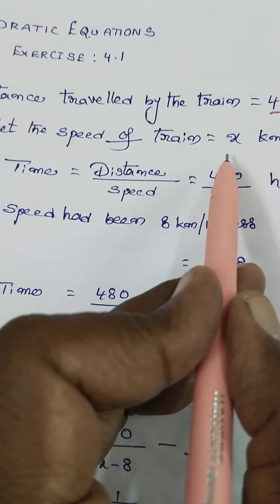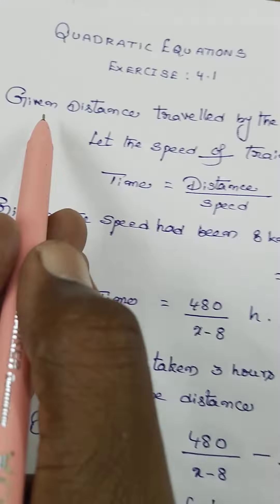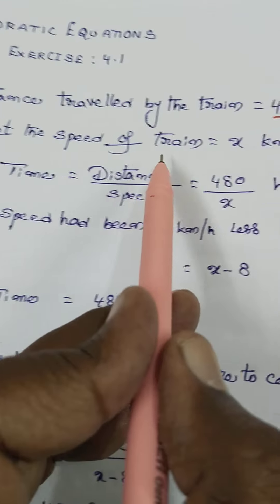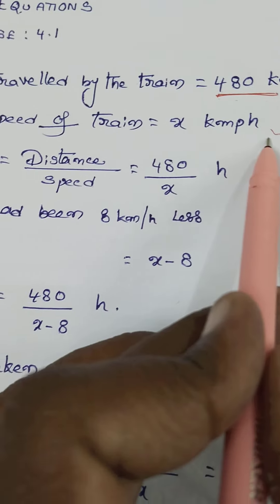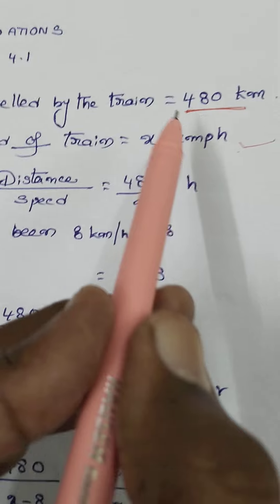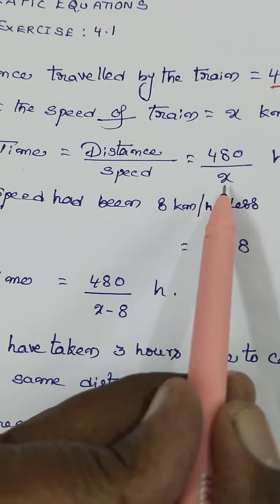Next, let the speed of the train equal x kilometers per hour. Time equals distance divided by speed, so time equals 480 divided by x hours.